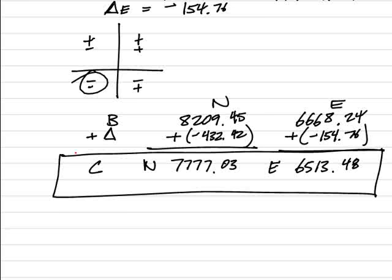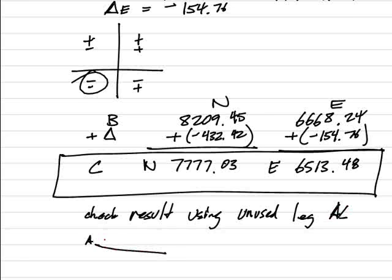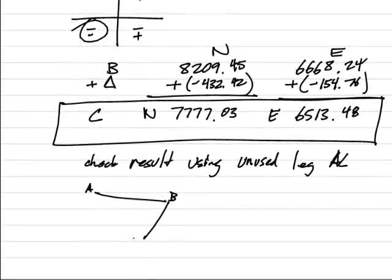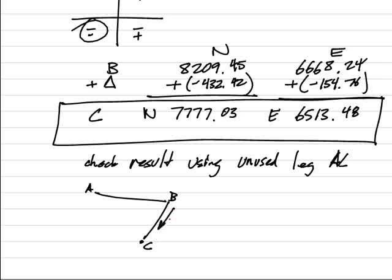If I want to check this independently, I can check my result using the unused leg AC in this case. You see, I knew AB from my original inverse. I calculated the length and direction of BC and calculated C relative to B. If I want to verify this, I can calculate C relative to A. And if I come up with the same result, then I know I have done it properly.